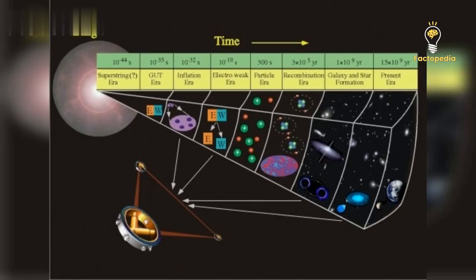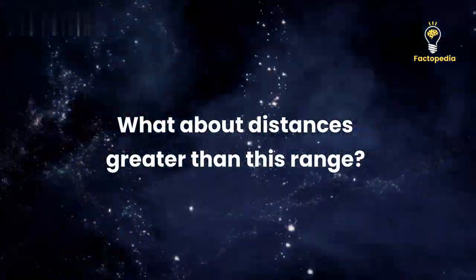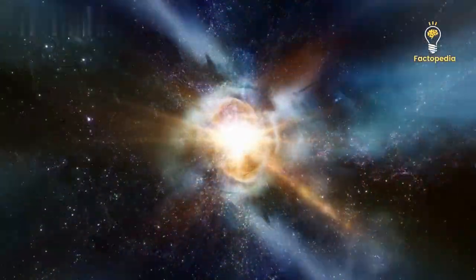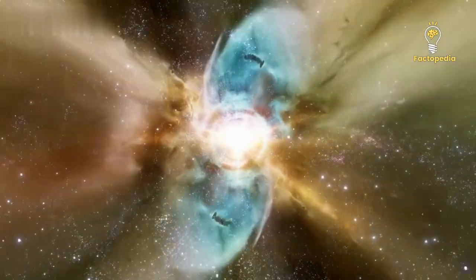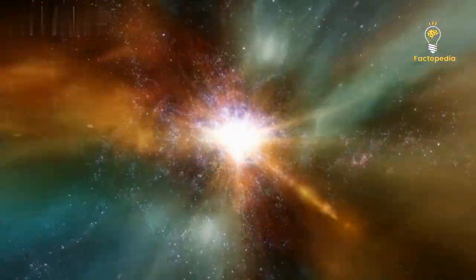Yet this method of using Cepheids is limited to distances ranging from 1 kiloparsec to 50 megaparsecs. What about distances greater than this range? To obtain a precise estimate, we need to explore even farther, and that's where type 1a supernovae come into play.